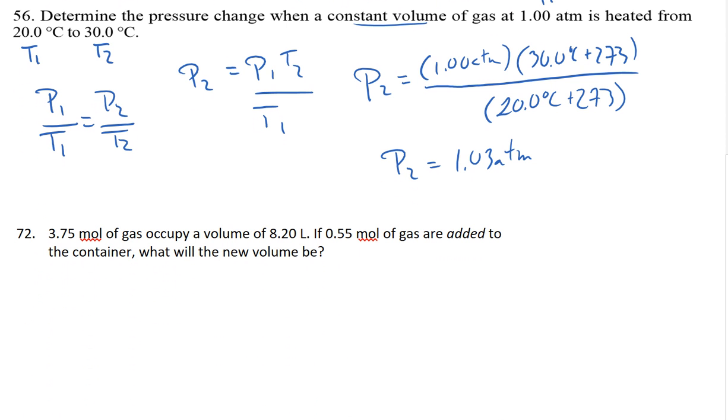The final question reads: 3.75 moles of a gas occupy a volume of 8.2 liters. If 0.55 moles of gas are added to the container, what will the new volume be? I have an initial number of moles and an initial volume. Here I'm not actually given a final number of moles, I'm given a change in the number of moles, but that will allow me to solve for N2.